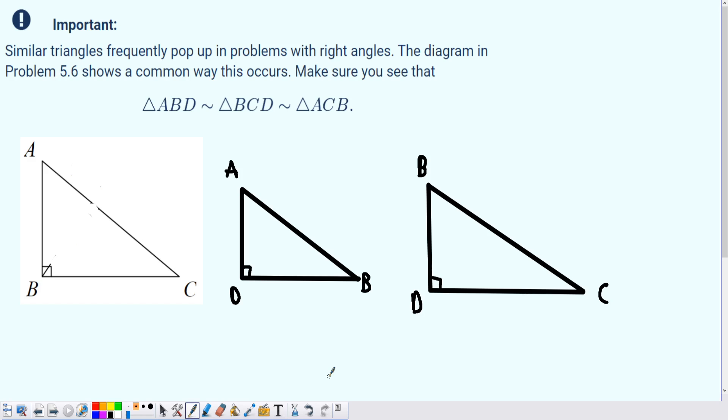Well obviously they all have 90 degree angles and we realize that they both ABC and ADB share an angle A. That's where we get the similarity. Triangle ADB is similar to triangle ABC because of the fact that they both share the angle A and they both have that 90 degree angle.